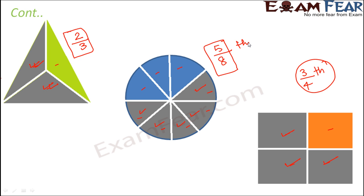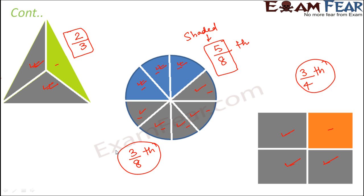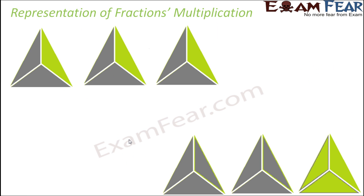If five eighths of the circle is shaded, what fraction is not shaded? Counting the unshaded parts: one, two, three — so three parts out of eight are not shaded. Therefore, three eighths of the circle is not shaded.